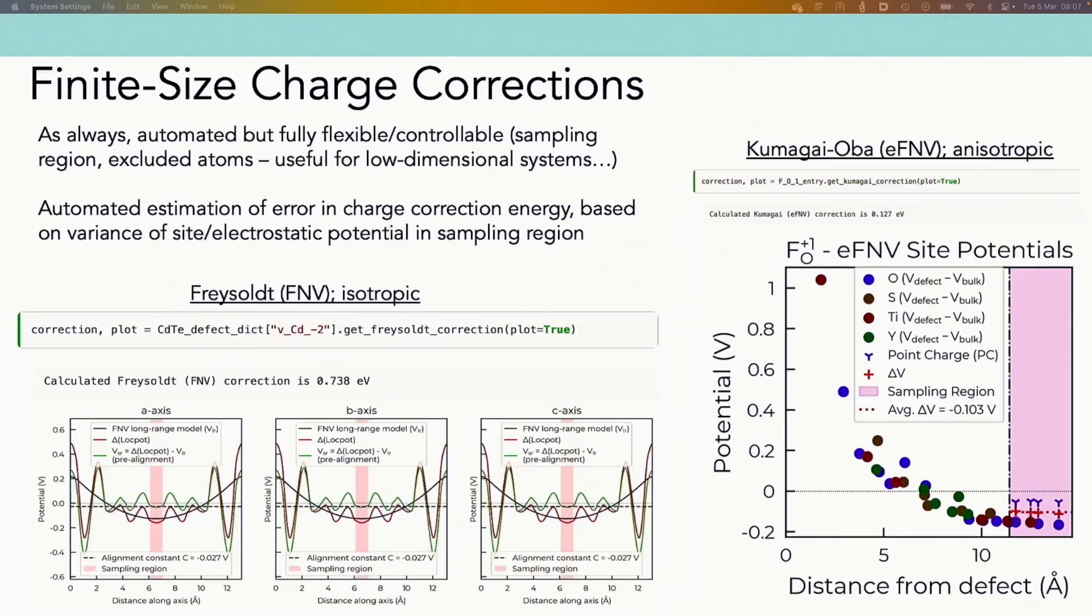Okay, so just some quick points to mention about step three, finite size charge correction. So these are one of the key components in our defect formation energies for charged defect supercells. DOPED automatically computes two of the most common approaches currently in the field, which is the Freysoldt FNV isotropic charge correction as well as the Kumagai-Oba eFNV charge correction for anisotropic systems. These plots are automatically generated, can be easily queried, and it also automatically estimates the error in your charge correction energy based on this variance in the sampling region. So it gives you an estimate of this error and maybe flagging cases where you might want to increase your supercell size to achieve a certain desired precision for your formation energies.